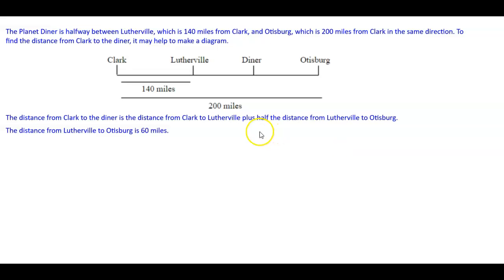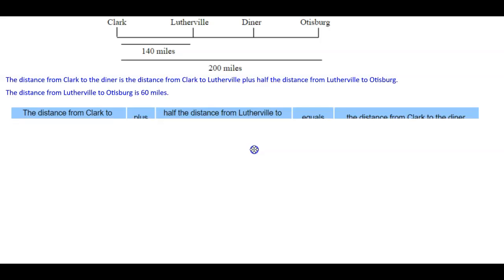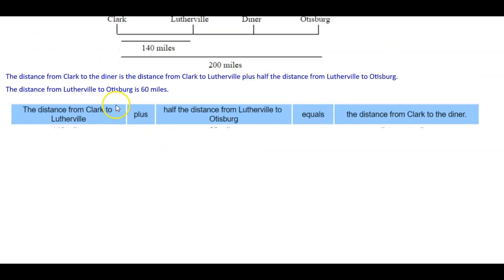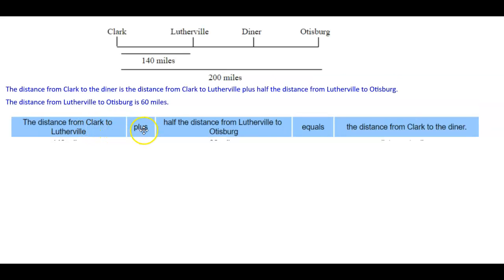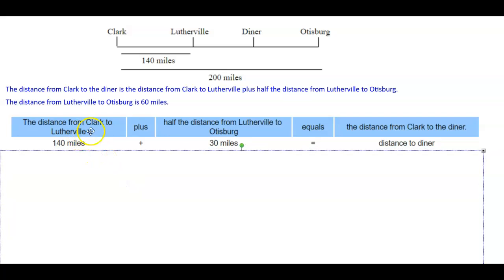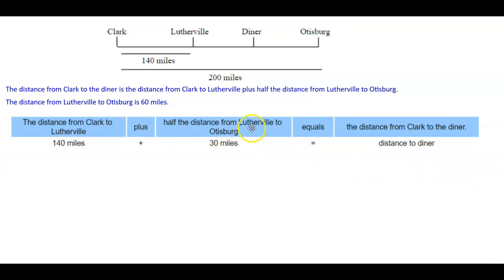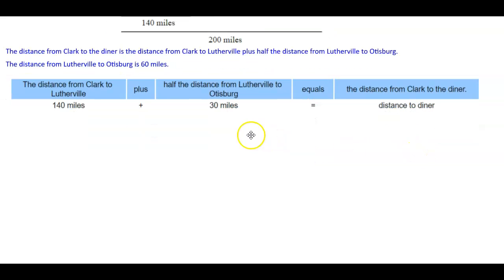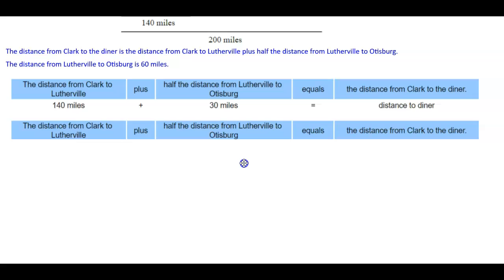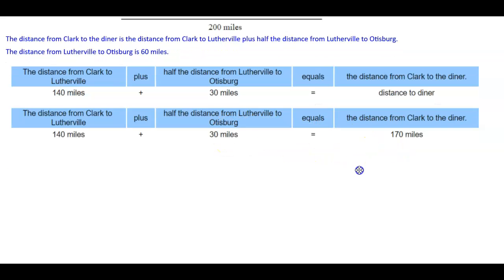Let's put this into a chart. The distance from Clark to Lutherville plus half the distance from Lutherville to Otisburg equals the distance from Clark to the diner. Half of 60 is 30 miles. So 140 miles plus 30 miles equals 170 miles — that's the distance to the diner.